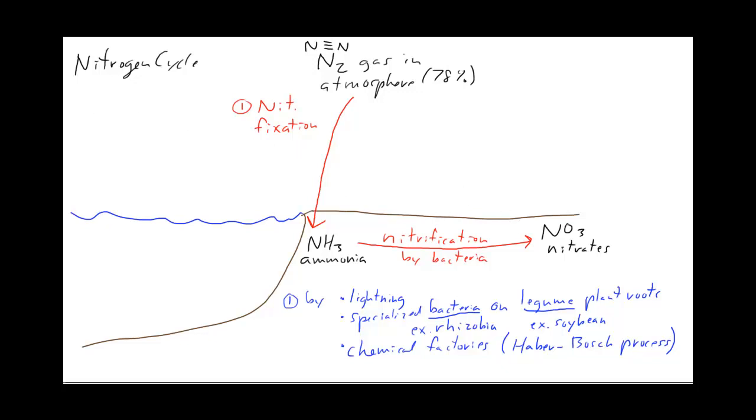Once it's in nitrate form, then it's able to be used by plants. So if we have a tree here, these nitrates can now flow into the tree. Once it's in nitrate form, it can go through the roots and get assimilated into the tree. That just means it becomes part of the tree.